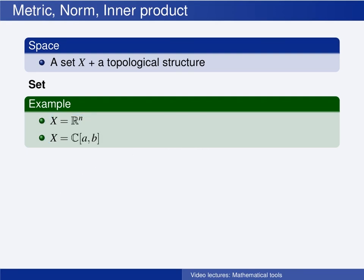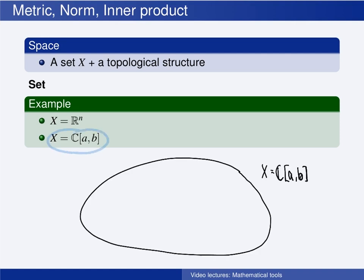Another set that we are interested in is the set of all real-valued continuous functions defined on the set from A to B. The elements in this set are real-valued functions. So, each element here is a real-valued function, F, that maps the set from A to B into a real number.